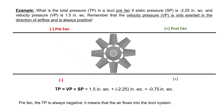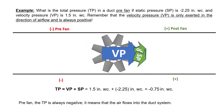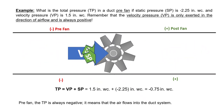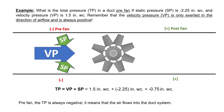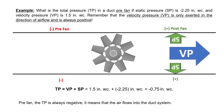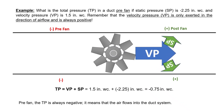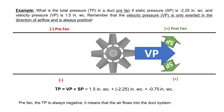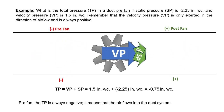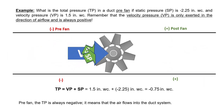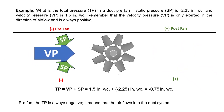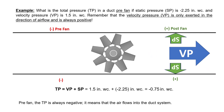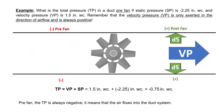For example, what is the total pressure in a duct pre-fan if static pressure is minus 2.25 inches water column and velocity pressure is 1.5 inches water column? Remember that velocity pressure is only exerted in the direction of air flow and is always positive. Pre-fan, the total pressure is always negative, meaning air flows into the duct system. Total pressure equals velocity pressure plus static pressure: 1.5 plus (minus 2.25) equals minus 0.75 inches of water column.